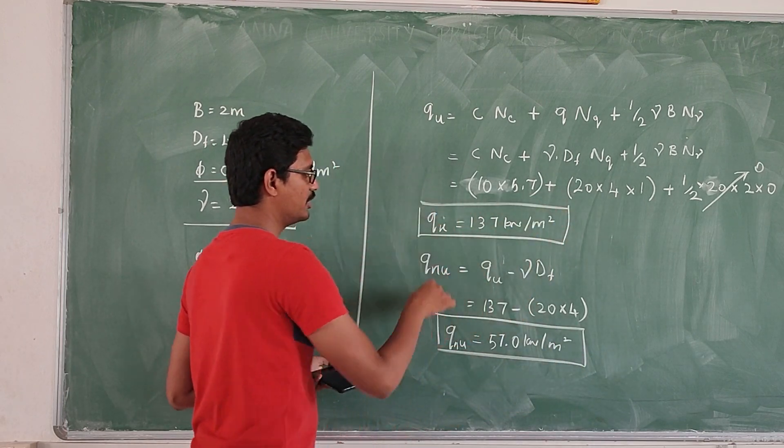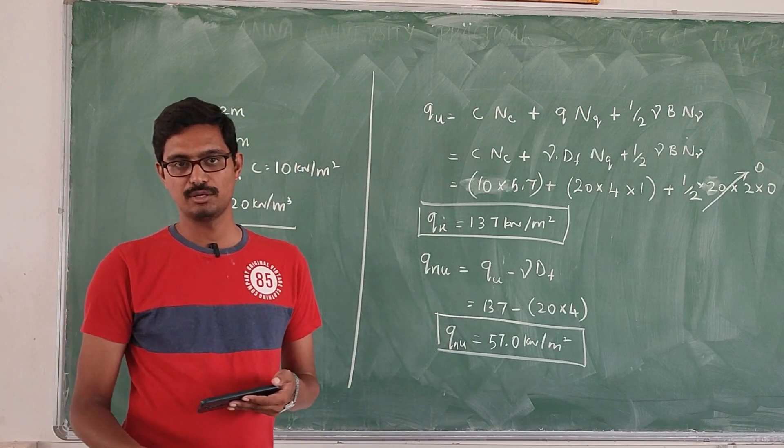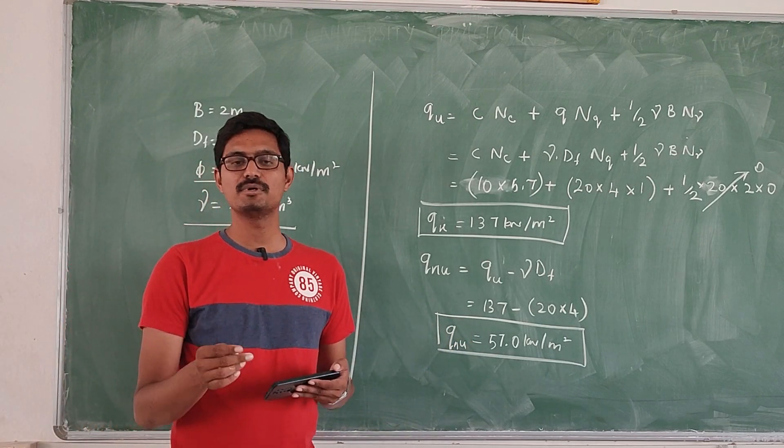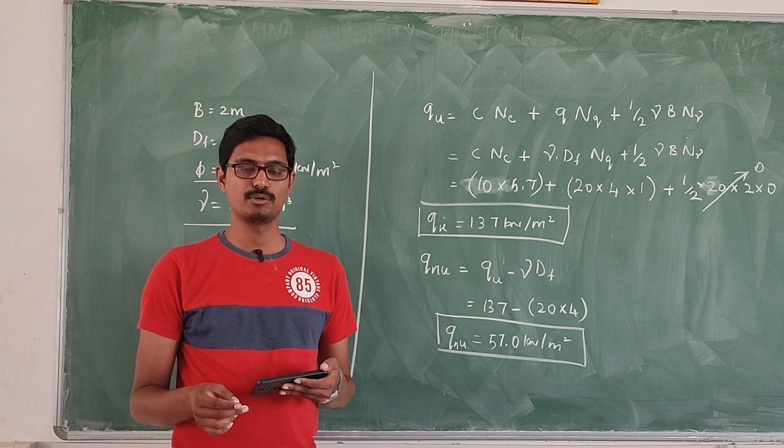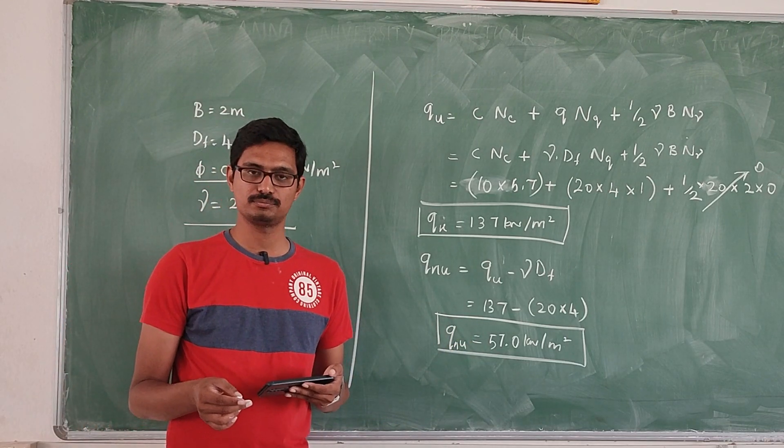So the ultimate bearing capacity is 137 kN/m² and the net ultimate bearing capacity is 57 kN/m². This is the method to solve the problem. We will see more in the next video. Thank you.